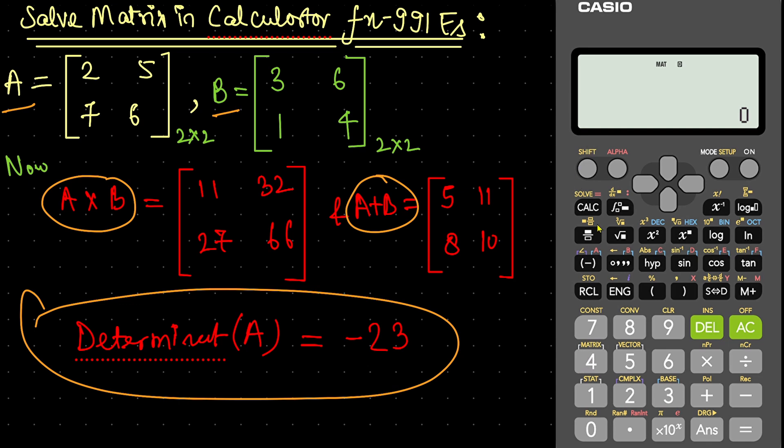Press shift. Then matrix. Then matrix A, which is on 3. Plus matrix. Again shift. Matrix B, which is on 4 equals. Here what we have calculated manually. 5, 8, 11, 10.